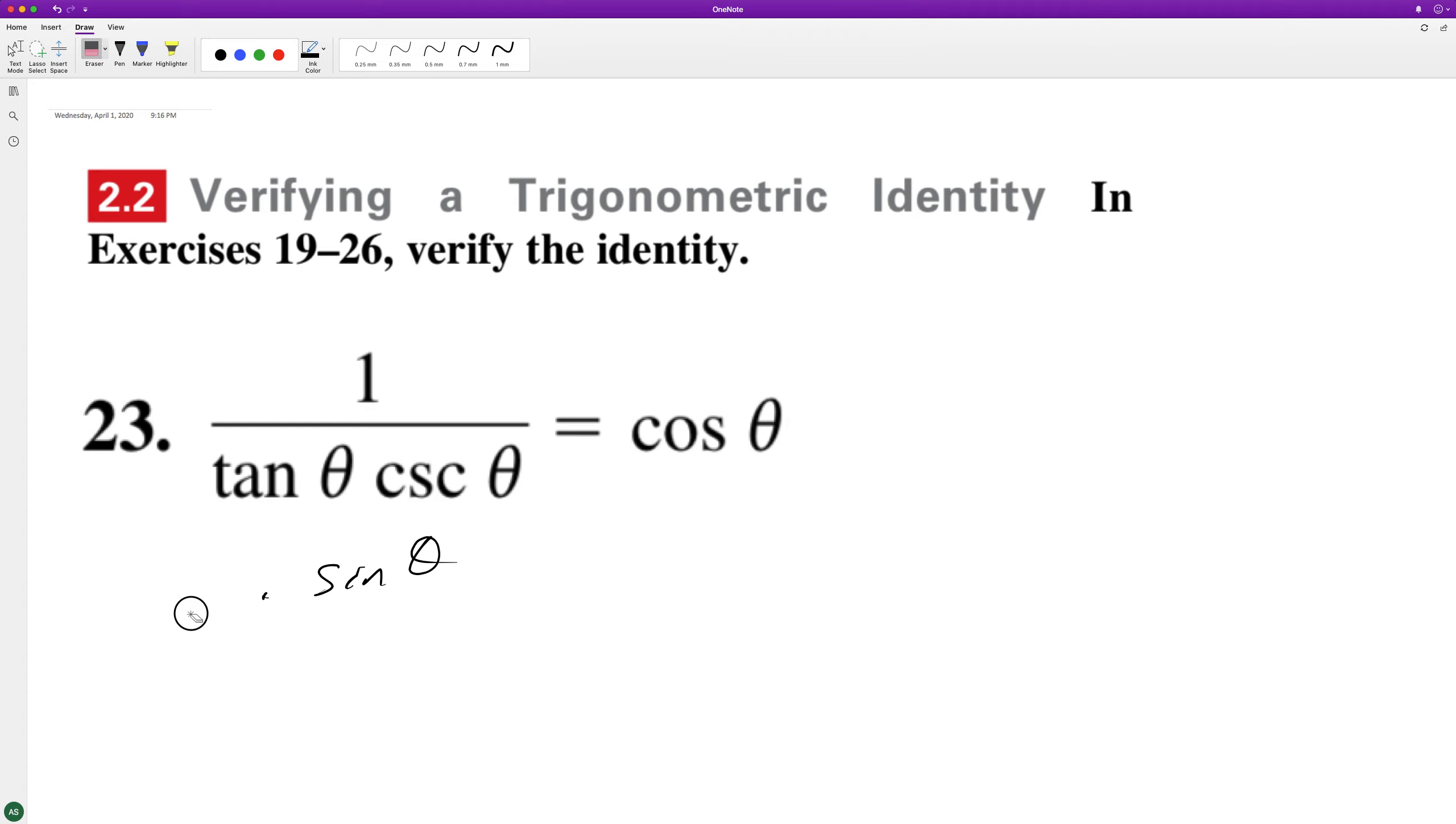I'll just go ahead and write this out so it's not confusing. Same thing as 1 over tangent can be converted to sine of theta over cosine theta, and then cosecant is 1 over sine theta. These cancel out.